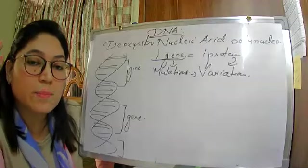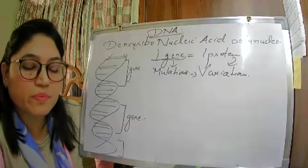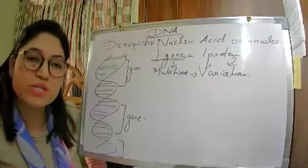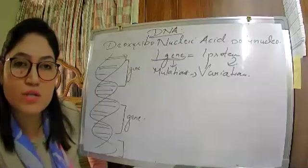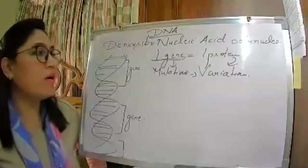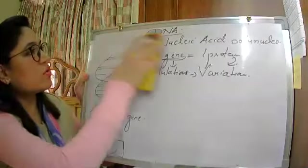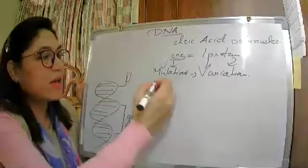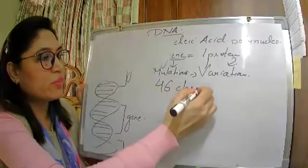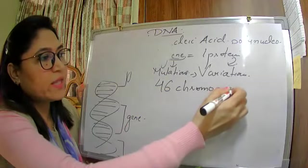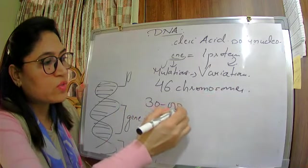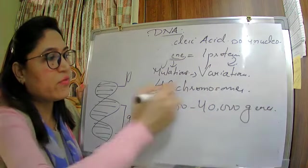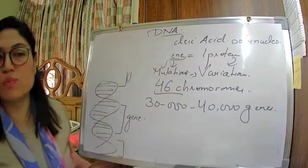There is a force of natural selection which selects the fittest organisms. A gene can be the same from generation to generation, or there can be alterations — mutations — which lead to variations. How many genes are there in the 46 chromosomes of humans? There are almost 30,000 to 40,000 genes present in the 46 chromosomes of human DNA.